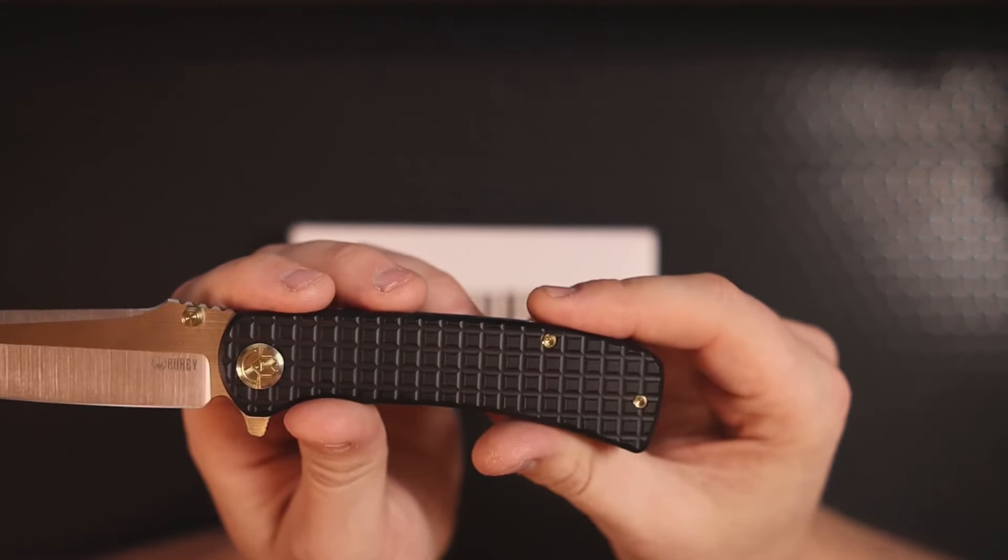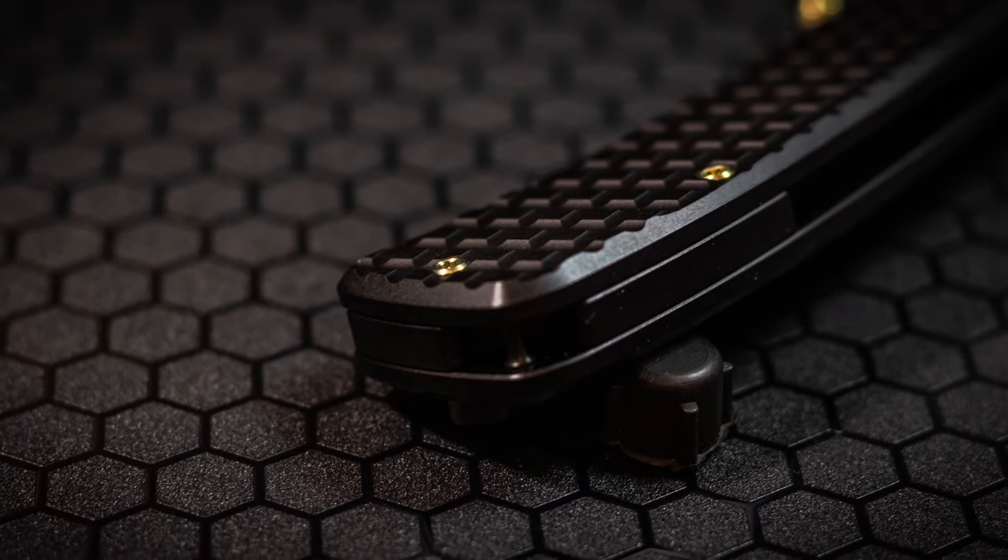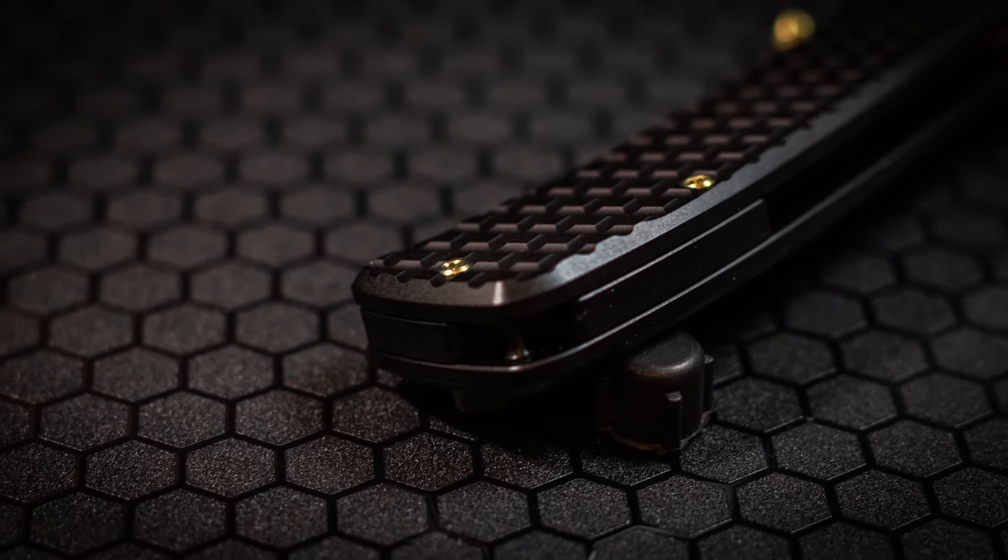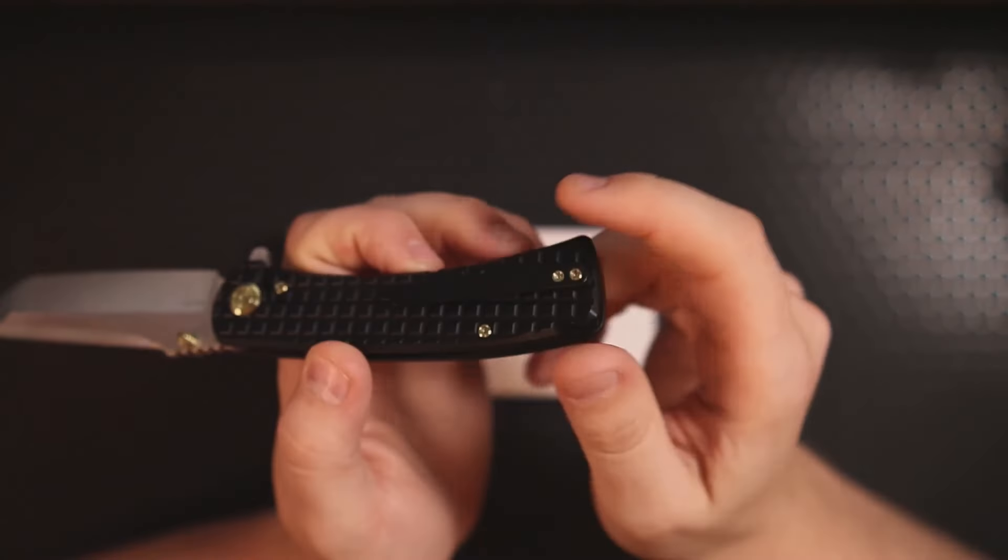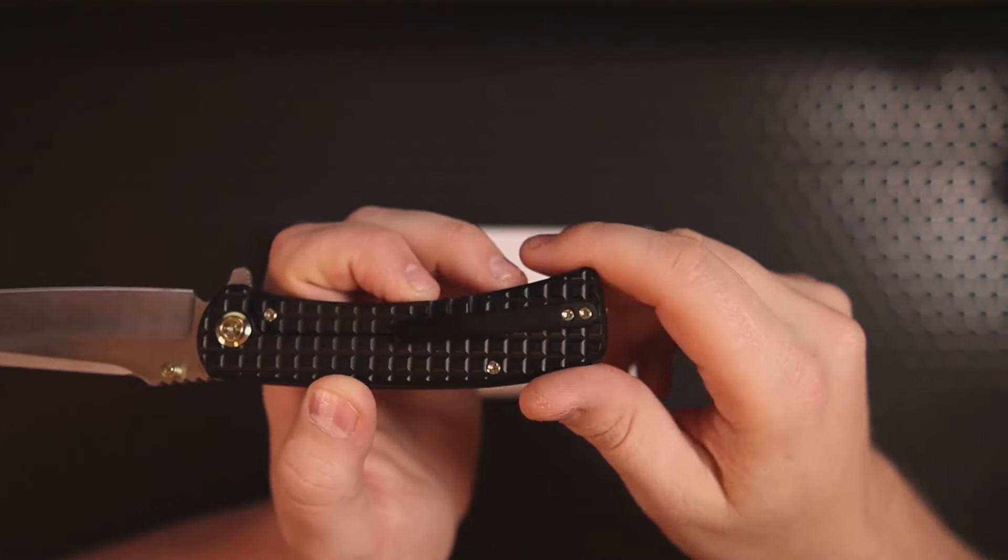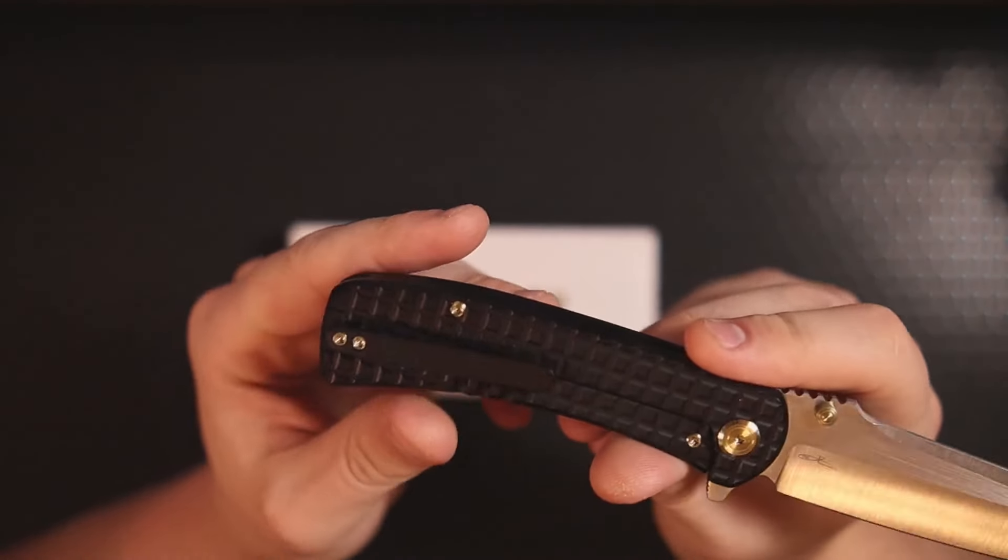We have brass accents for both the pivot and the body screws and those body screws are in fact T8 as well. We also have a black titanium backspacer that features a hidden lanyard post, which is great because we don't have any unnecessary holes going through the handle scales and the people that like lanyards can still have one.